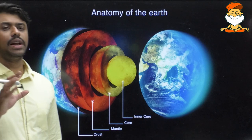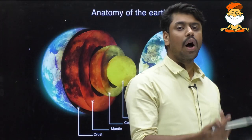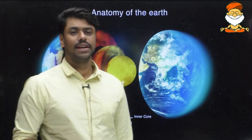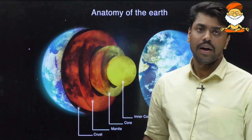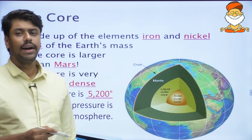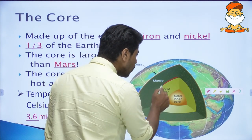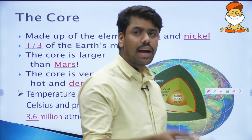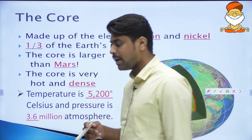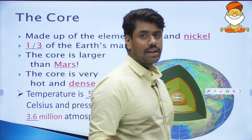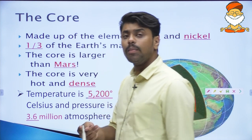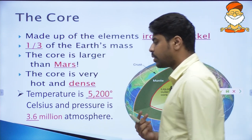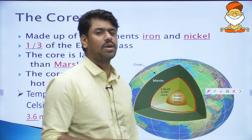With the core being the innermost layer, we begin our journey there. The core itself is made of two layers. It might be surprising, but the innermost layer is solid and the outer core is liquid or molten. To understand how this came about, we need to understand certain characteristics of the core.